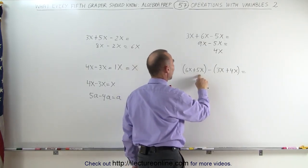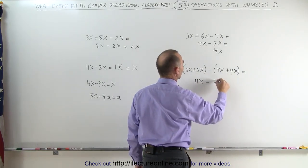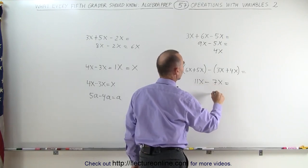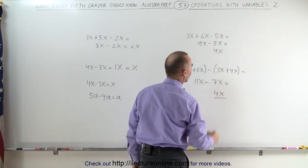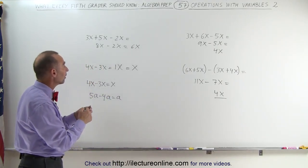So this becomes 6x plus 5x, which is 11x, minus 3x plus 4x, which is 7x. And that becomes 11 minus 7, which is 4x as the final answer. And that's how we deal with operations when they include variables.